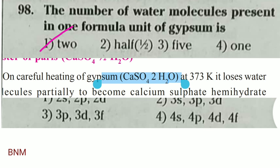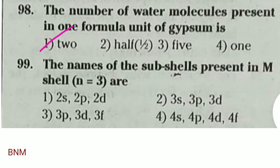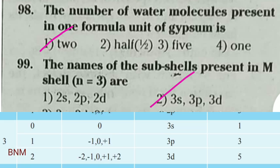The names of the subcells present in the M shell: when n equals 1, K cell; n equals 2, L; n equals 3, M. So the M shell corresponds to n equals 3.